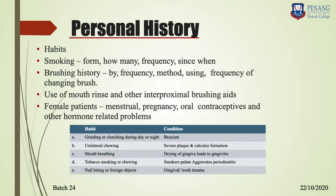Other than habits, ask about the patient's brushing history. You need to know the proper brushing method, the frequency of brushing, and what means the patient uses — whether it is toothpaste or tooth powder, a toothbrush, fingers, or a neem stick. If they use a toothbrush, ask whether it is hard, soft, or medium, how frequently the patient brushes, what method they use, and how often they change the toothbrush.